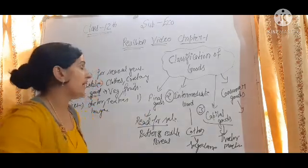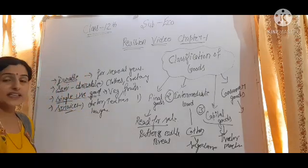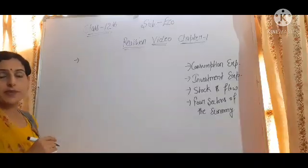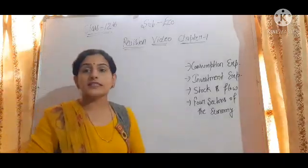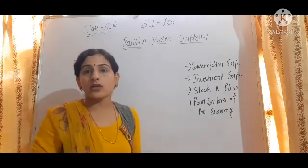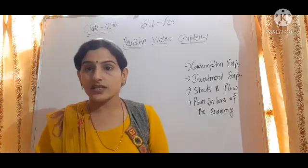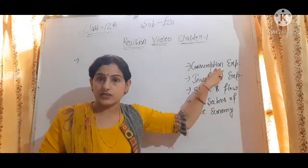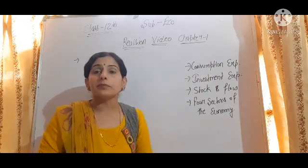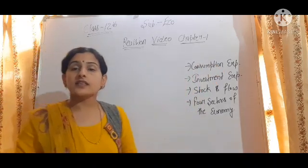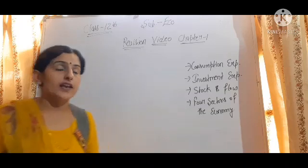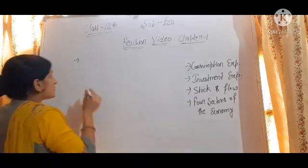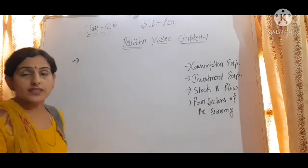The next concept is the components of consumption expenditure. As we are talking about macroeconomics, we will talk at the national level, including the aggregate expenditure in the economy. Expenditure on the purchase of goods and services in the economy in an accounting year is called aggregate consumption expenditure.